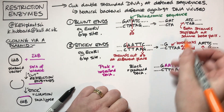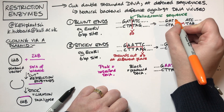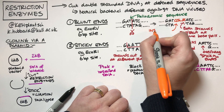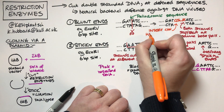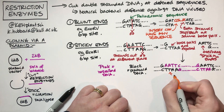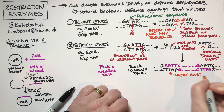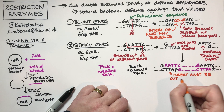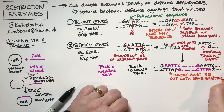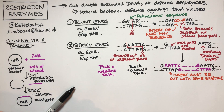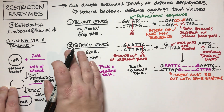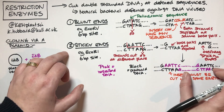In the blunt end case, that's not quite as specific — you could put any sequence you liked in the middle there; the insert can have any sequence. Whereas with sticky ends, the insert must be cut with the same enzyme. This means you have a lot more control over what's going on when you use sticky-ended cloning. You can do blunt-ended cloning and there are times it's a good thing, but we mostly use sticky-ended cloning because it gives you this highly specific process.